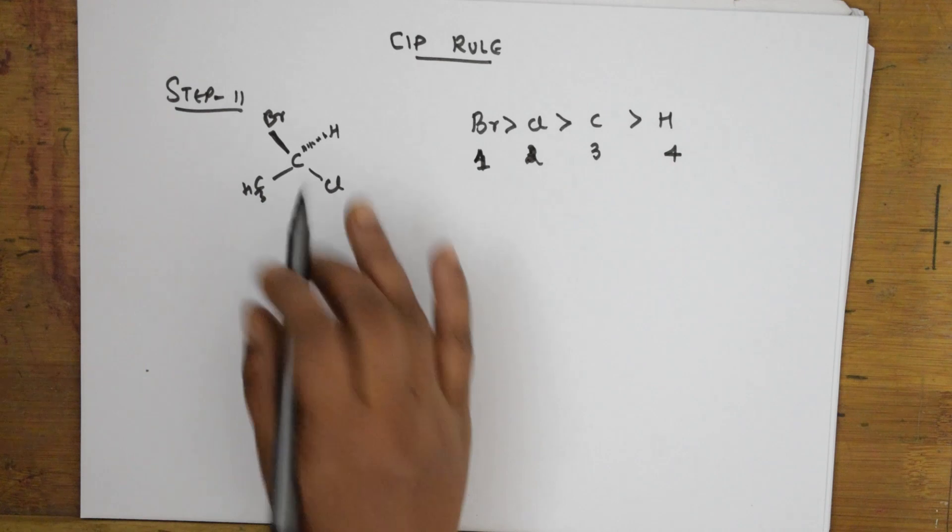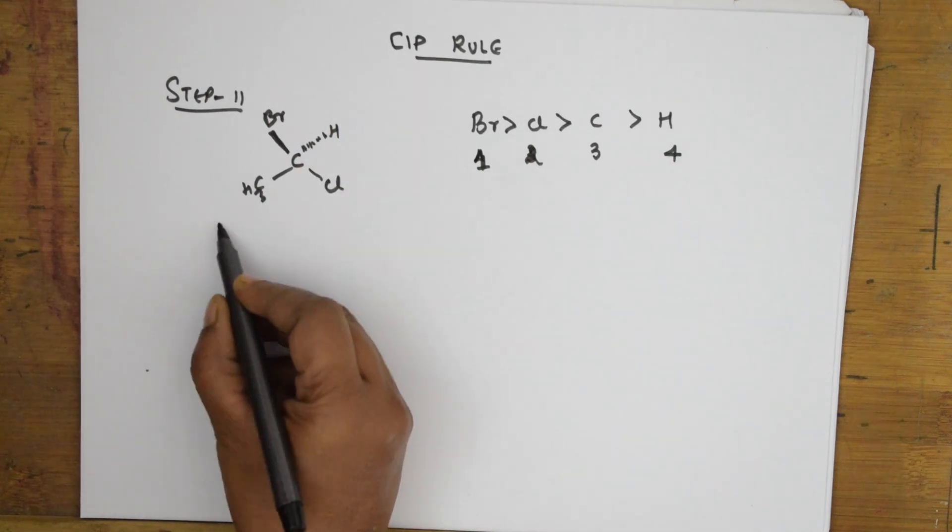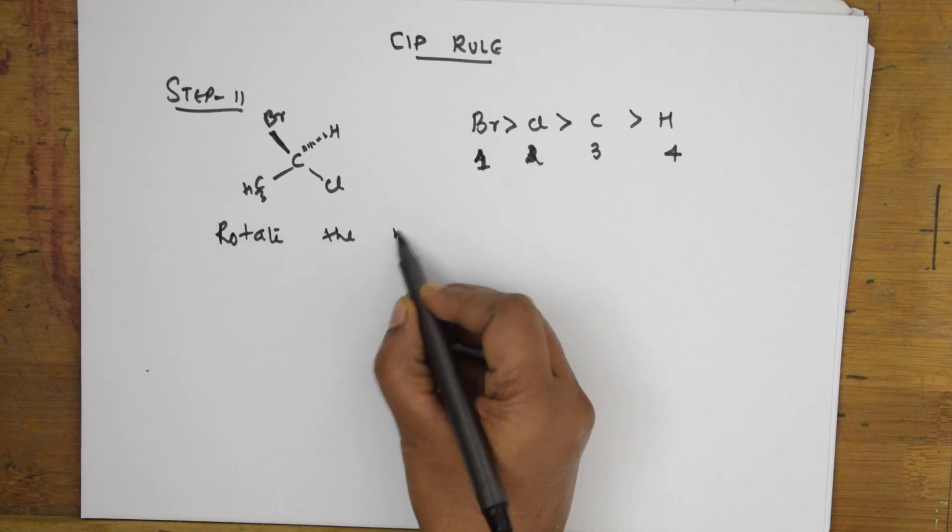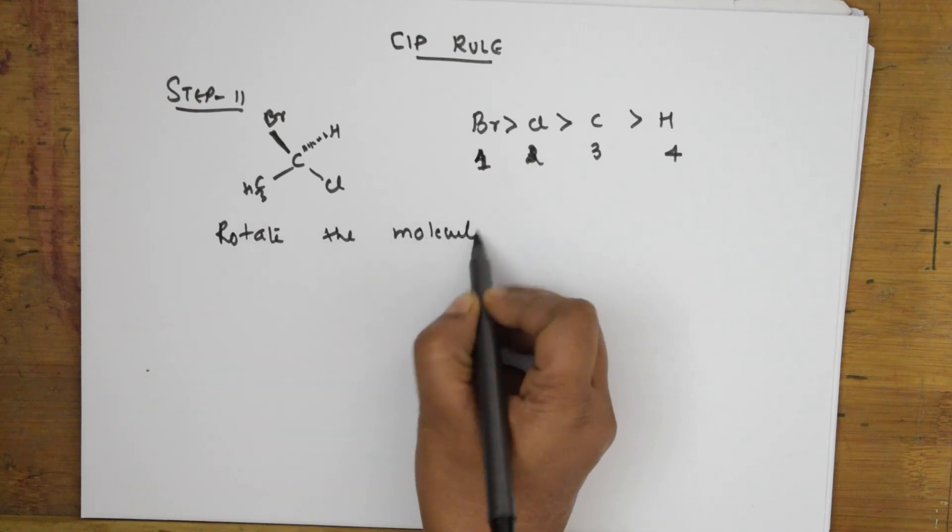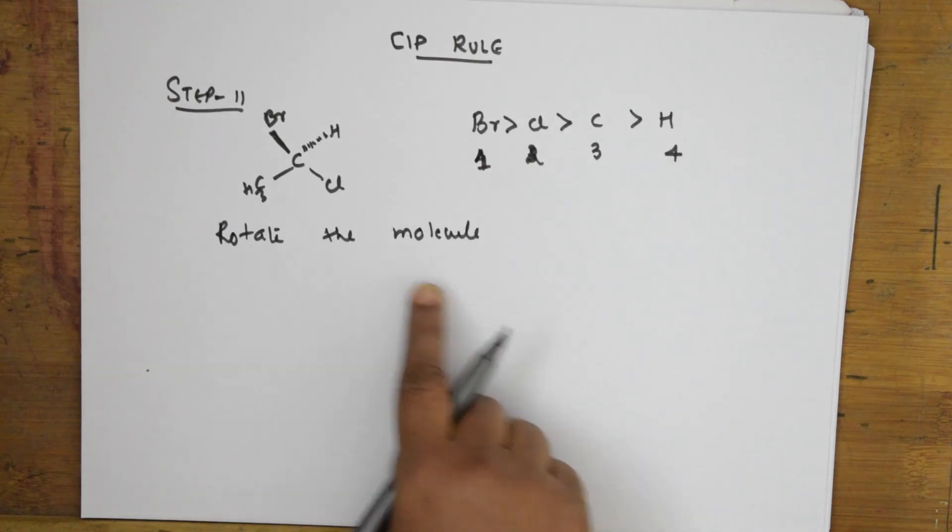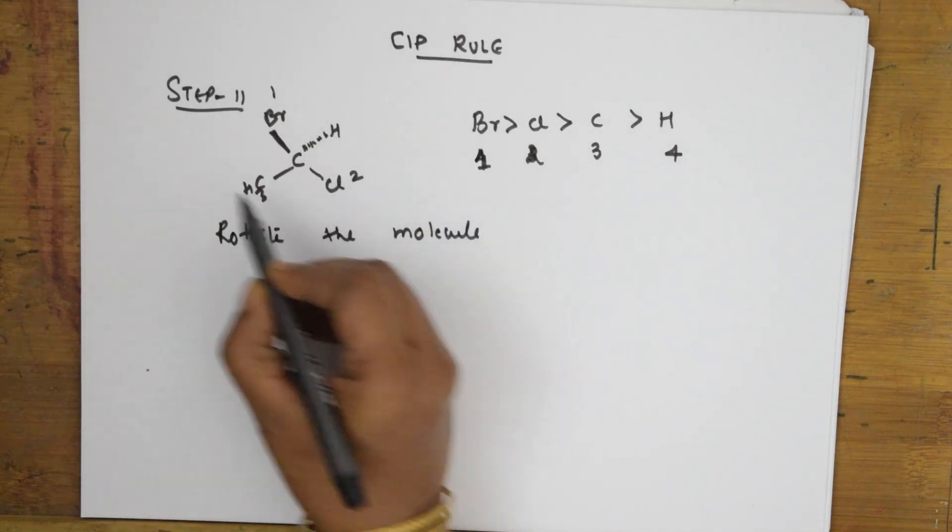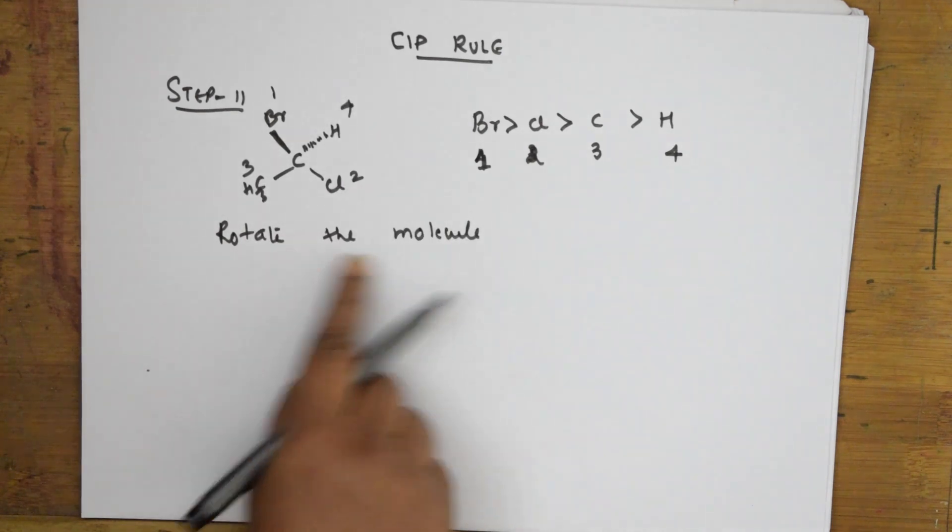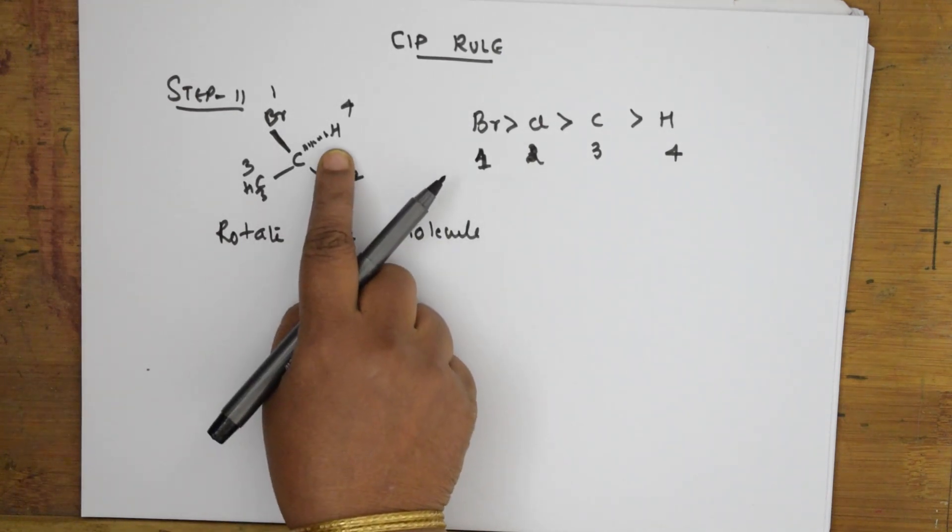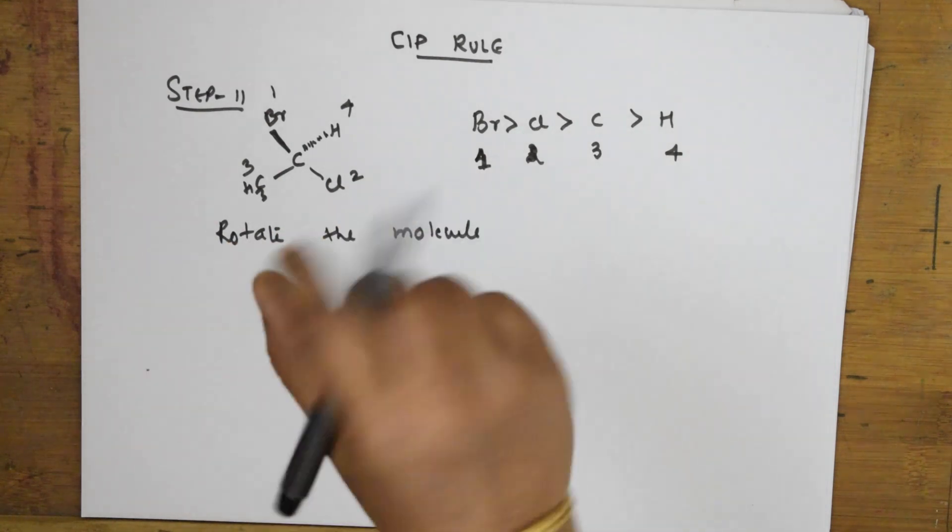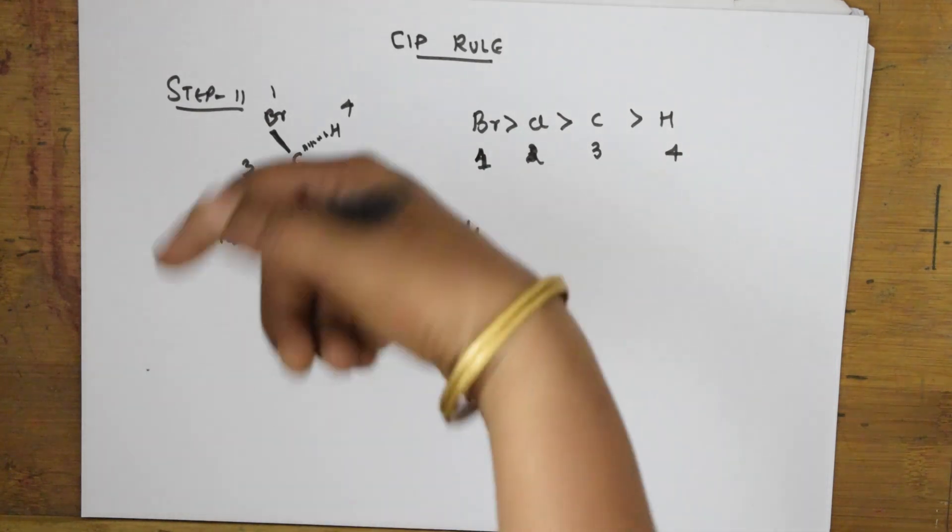In step 2, we're going to take the same molecule and we rotate it. I rotate the molecule such that the one which is marked 4—this is 4—let us number: this is 1, this is 2, this is 3, this is 4. I'm going to rotate the molecule in such a way that the one which is ranked 4 is at the back.